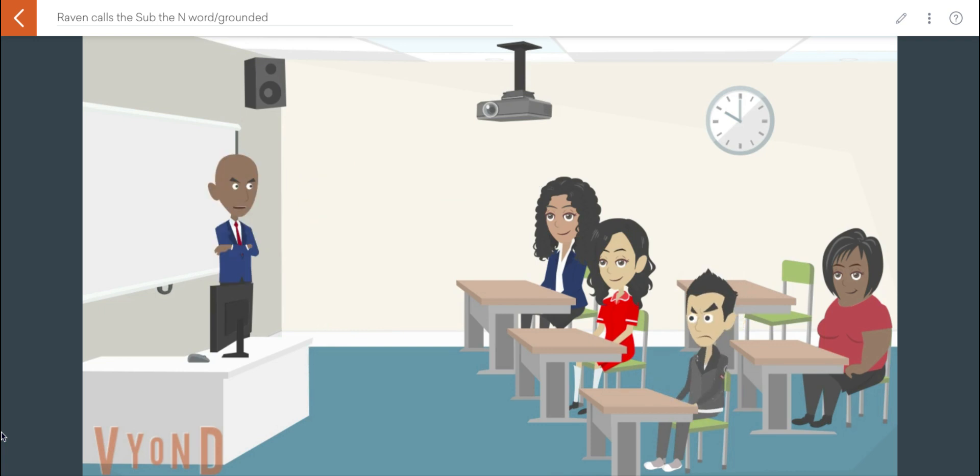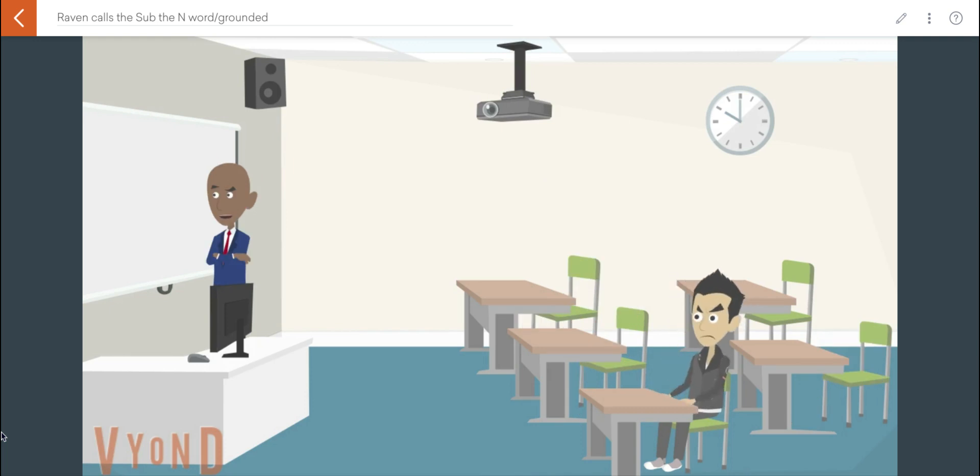Okay, class is over. Head to lunch now, except for you, Raven. You have lost your privilege to enter the lunch room. I am gonna have to get you your lunch. Oh, come on. Today's lunch is buffalo fries and steak.